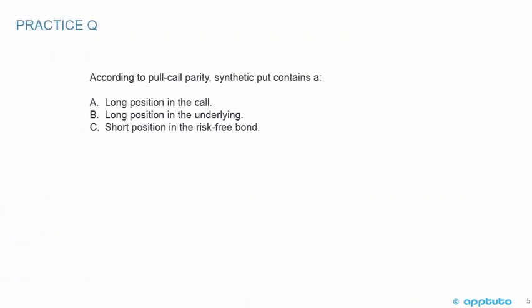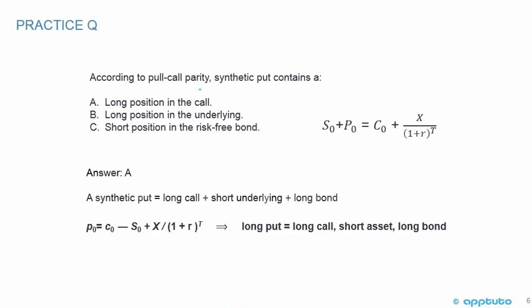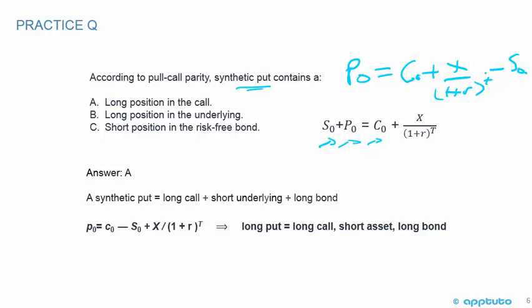Practice question 2: according to put-call parity, the synthetic put contains — A) long position in the call, B) long position in the underlying, or C) short position in the risk-free bond. Start with S0 plus P0 equals C0 plus X over (1 plus R) to the T. Rearrange for P0: P0 equals C0 plus X over (1 plus R) to the T, then subtract S0. Long position in the call — that's true, A is correct. Long position in the underlying — no, it's a short position. Short position in the risk-free bond — no, it's a plus sign, so it's a long position.